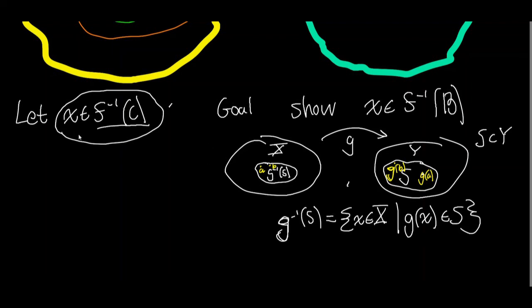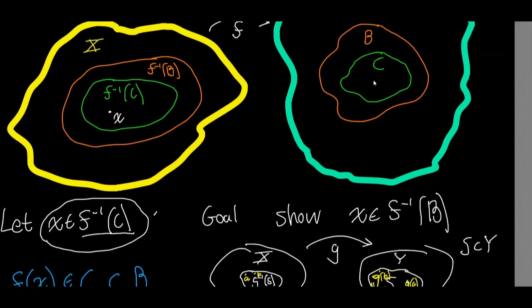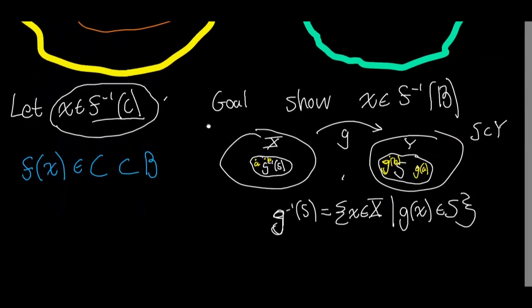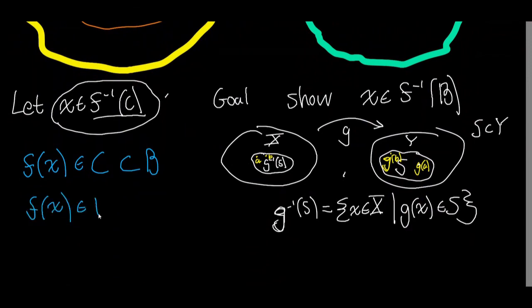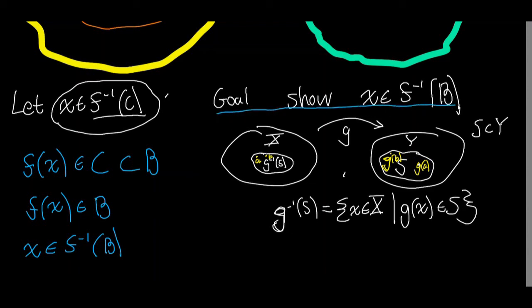Now, we know that x is in the inverse image of C under f, so by definition that means f(x) is in the set C. But C is a subset of B, so every point in C is also in B. That means f(x) is also in B. Therefore x is a point in the domain of f that gets mapped by f to a point in B, which by definition of the inverse image means x is in the inverse image of B under f — exactly what we wanted to show. And we're done.